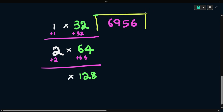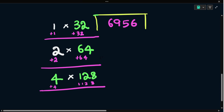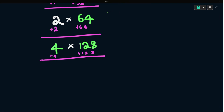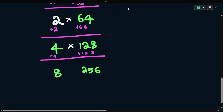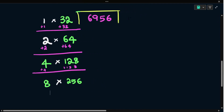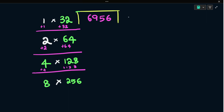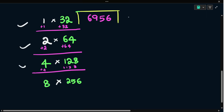Next, add the same number again: 2 plus 2 is 4, and 64 plus 64 is 128. Then 4 plus 4 is 8, and 128 plus 128 is 256. So stop at 8. We find 4 terms: 1, 2, 3, 4.